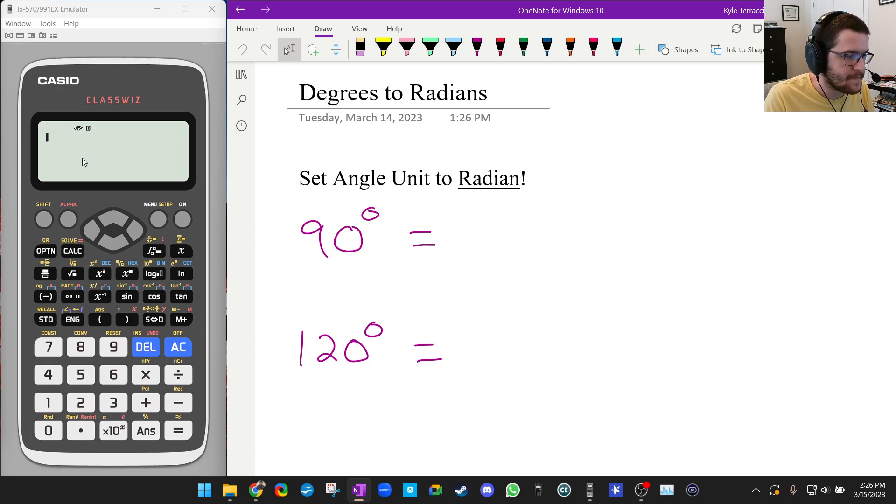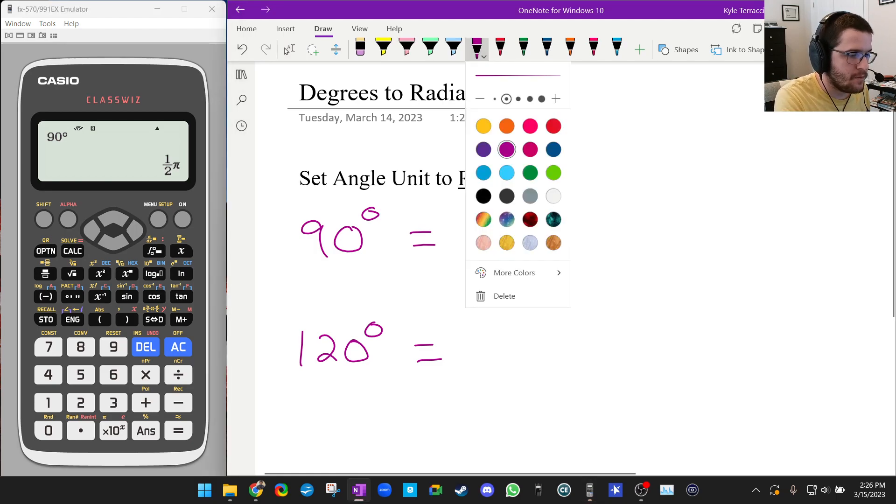So on this calculator, what you're going to do is, if we want to convert from degrees to radians, we're going to set the calculator mode to radians. So watch what I do. Shift, setup. So shift menu takes you to setup. Then you see where it says angle unit. So we're going to press two. And we want to set the angle unit to radians. So we're going to press two again. Now, if I type in 90, let's say 90 degrees, I type in 90. And then I press option. And I press angle unit. And I want degrees. So I press one. So see how it says 90 degrees, but the calculator is in radian mode. So if I press enter, it will convert it to one half pi.